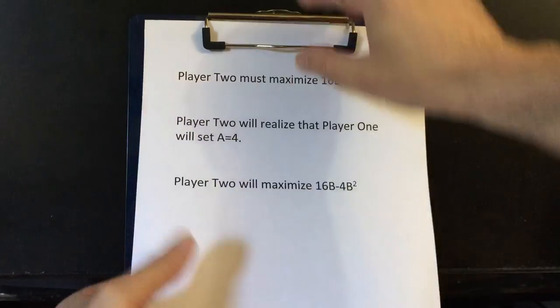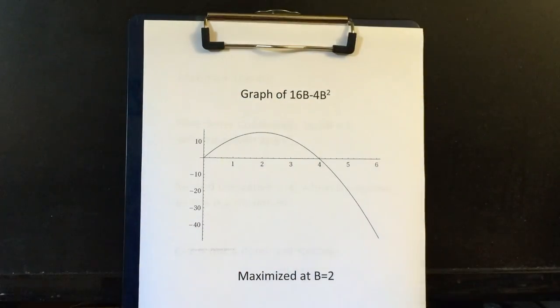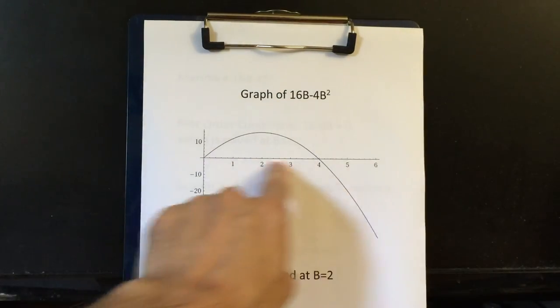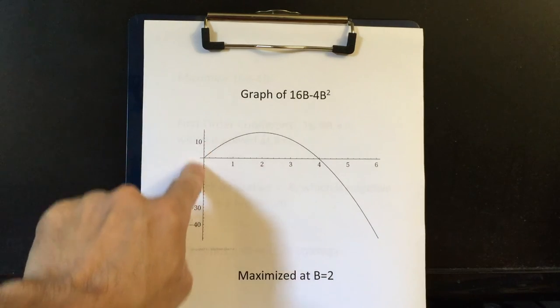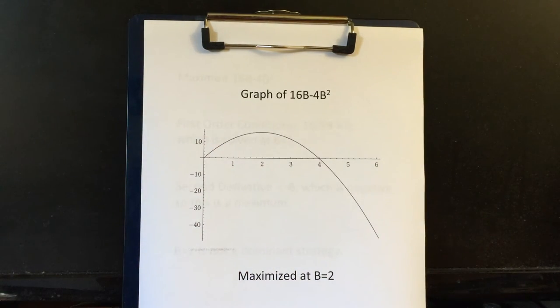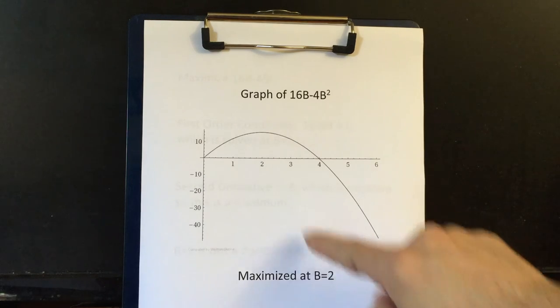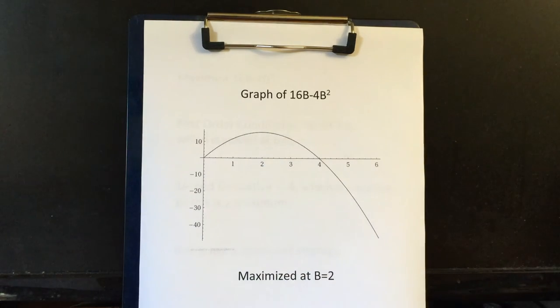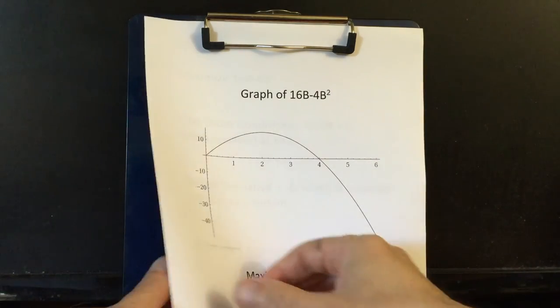So player two graphs that function. This is the value of B and this is player two's payoff. And that's maximized at B equals two, right? That's the highest point. But let's use calculus to make sure it's not really like 2.01 or something.